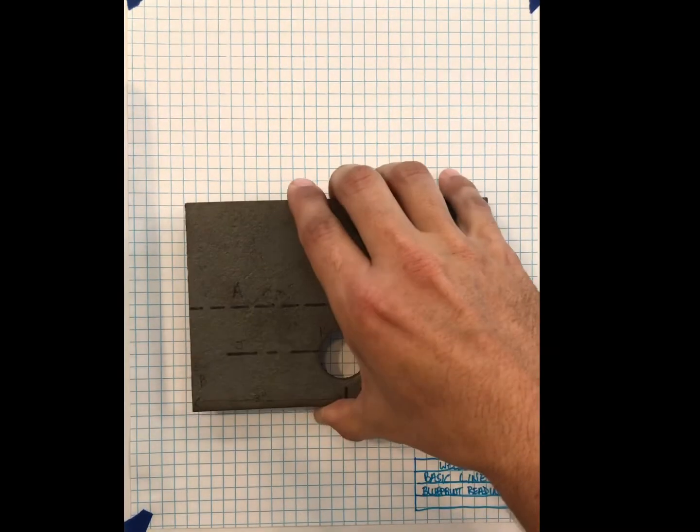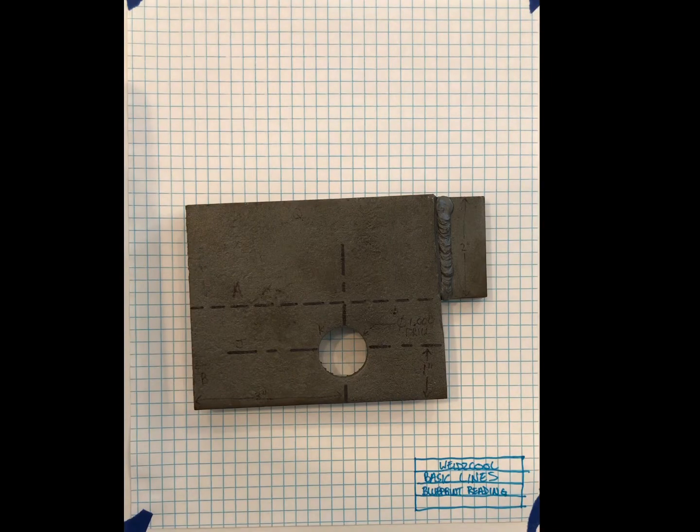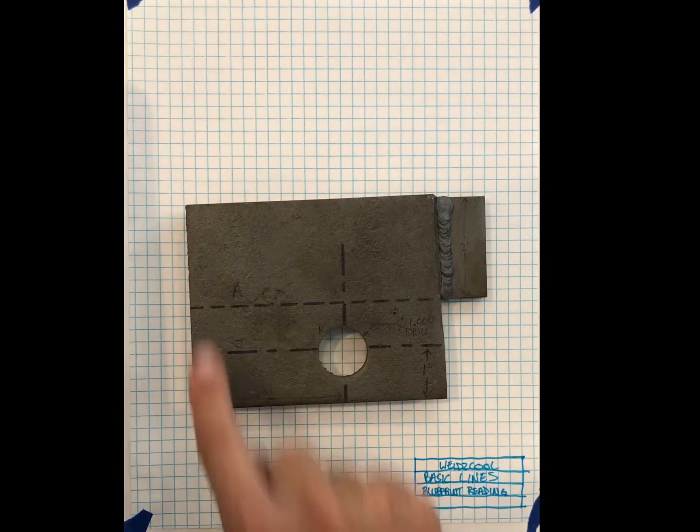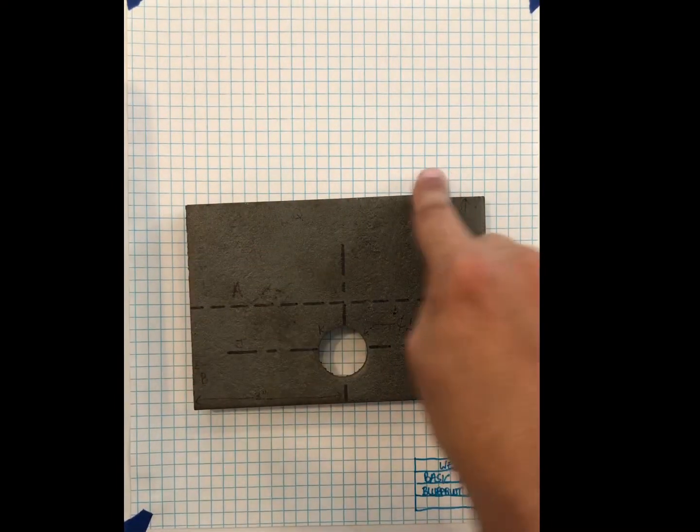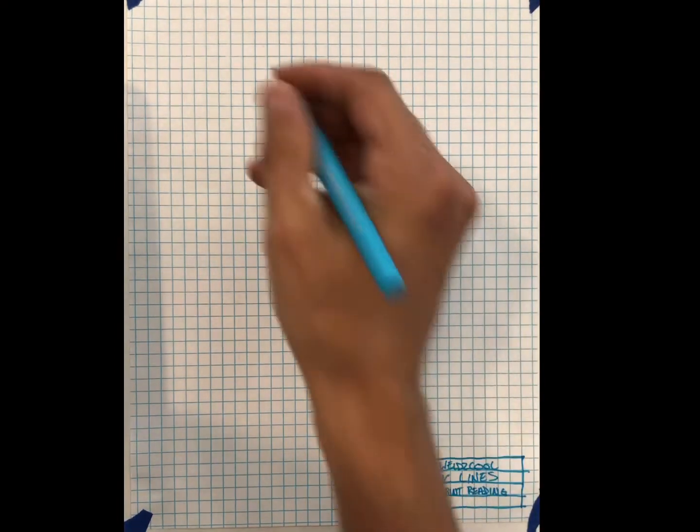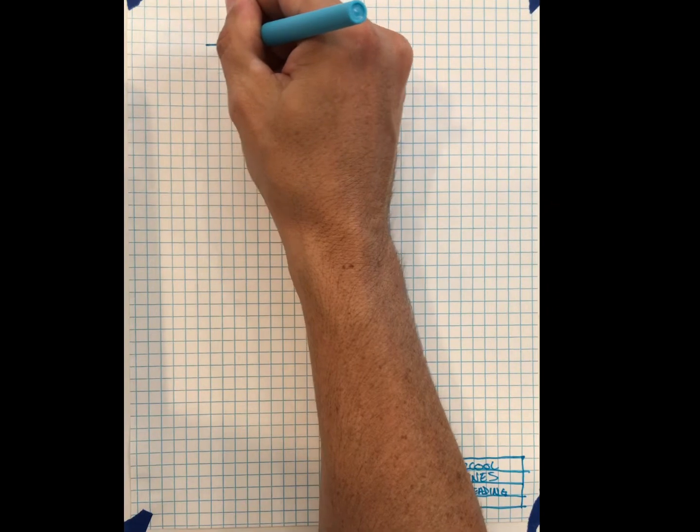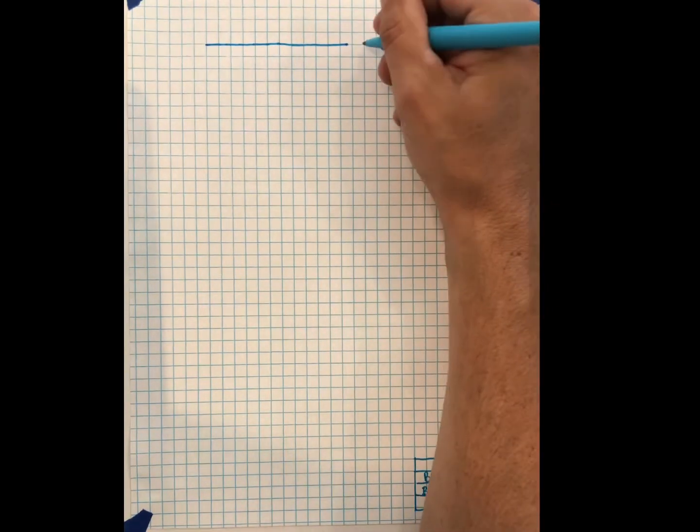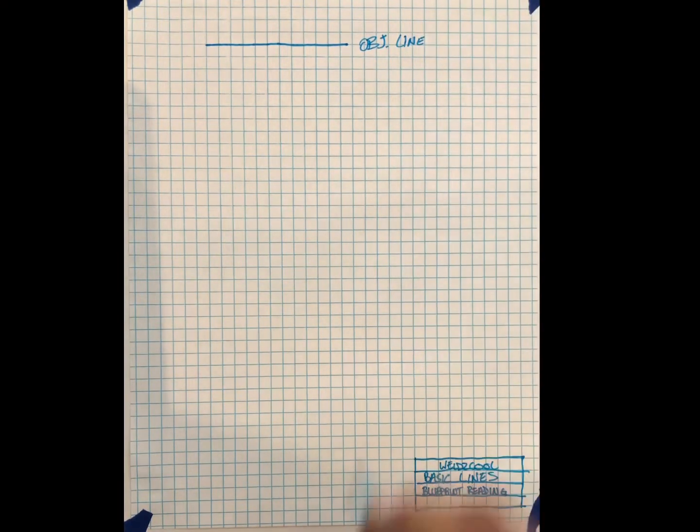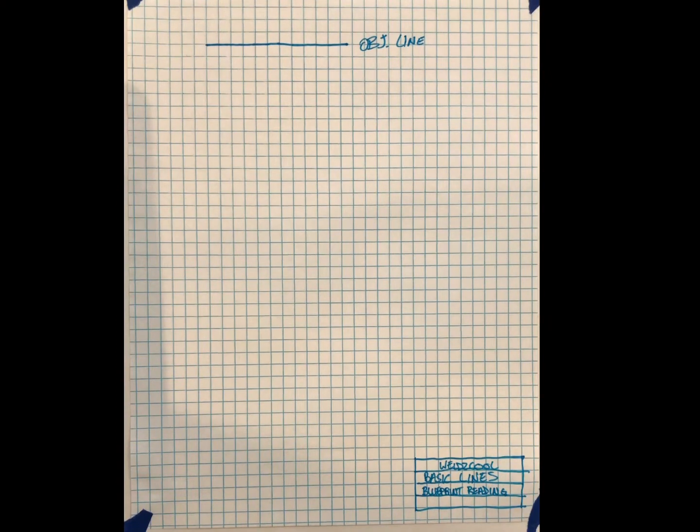I'm going to cover an object line first. That's the most common, the most important. We need to know the shape of the part. If I'm looking straight down at this component, we're looking at 2D, not 3D. I can see this edge, I can see this edge, and I can see an edge right here. Anytime we can see those edges, that is considered an object line. I'm going to start right up here at the top and draw this a little bit thick. Object lines are thick, solid lines and show the visible part.